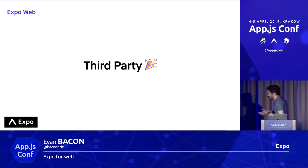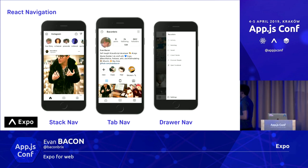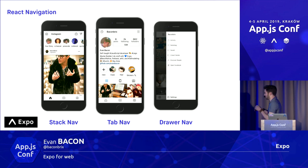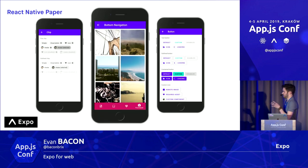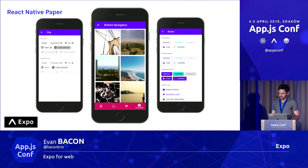I also wanted to talk about third-party integrations — libraries that work with React Native Web, and by extension with Expo Web very nicely. Things like React Navigation, which is what I was using for the Instagram prototype. You've got the drawer navigator, the tab, the stack navigator, and all that stuff just works across both platforms in a clean and concise way. There's also the switch navigator, which adds routing to your URL bar as you move through the navigator. I also really like React Native Paper by Call Stack — it's a material design library that works the same way in native as it does in web.